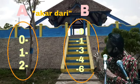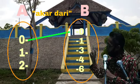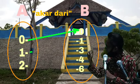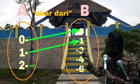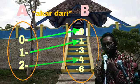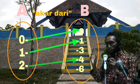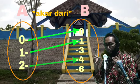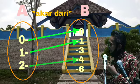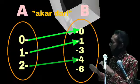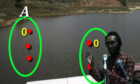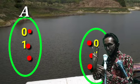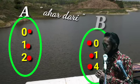Maka akan kita pasangkan: 0 dengan 0, 1 dengan 1, 2 dengan 4. Sekarang perhatikan — ada dua anggota di himpunan B yang tidak mendapatkan pasangan, yaitu bilangan 3 dan 6. Jika angka 3 dan 6 kita hilangkan, maka anggota B tinggal 3 anggota, yaitu {0, 1, 4}.